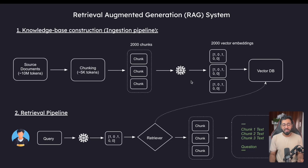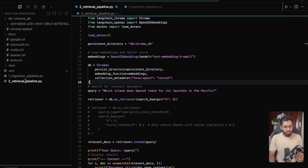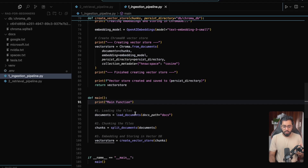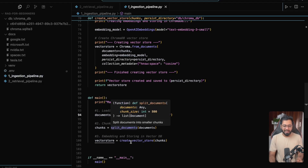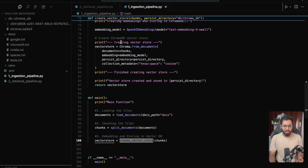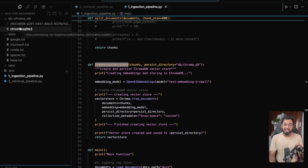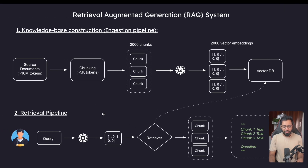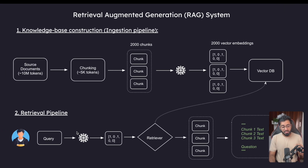Hello guys, welcome to this video where we are going to be coding out this retrieval pipeline right here. In the previous section, we saw how we can implement the ingestion pipeline and we did successfully implement it. We actually loaded all of the documents, then split them, and then stored them in the vector store. All of the embeddings live in this particular directory right here. So right now we are going to go ahead and implement the retrieval pipeline.